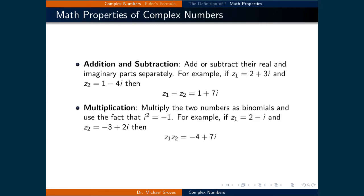Addition and multiplication of complex numbers follow vector addition and multiplication rules. For example, if we are adding or subtracting two complex numbers, we will add or subtract their real and imaginary parts separately. For example, if z1 is equal to 2 plus 3i, and z2 is equal to 1 minus 4i, then z1 minus z2 is equal to 1 plus 7i.